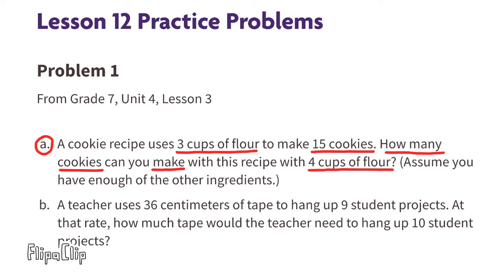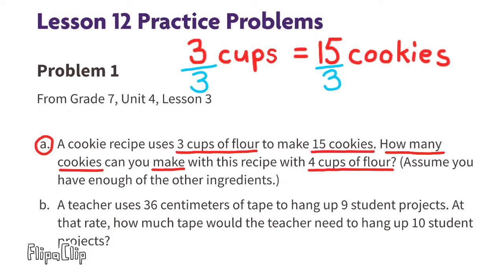The information tells us that 3 cups of flour makes 15 cookies. Let's find out how many cookies can be made with just 1 cup of flour. 3 divided by 3 equals 1 cup of flour, and 15 divided by 3 equals 5 cookies. With 1 cup of flour, you can make 5 cookies.